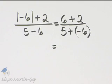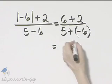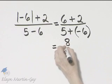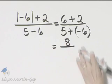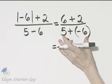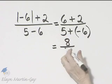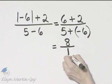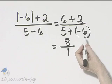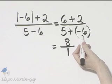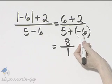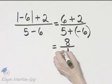And now let's continue to simplify. In the numerator, 6 plus 2 is 8. In the denominator, I'm adding two numbers with unlike or different signs. We subtract absolute values. 6 minus 5 is 1, and we keep the sign of the number with the larger absolute value. This number has the larger absolute value, and it is negative.